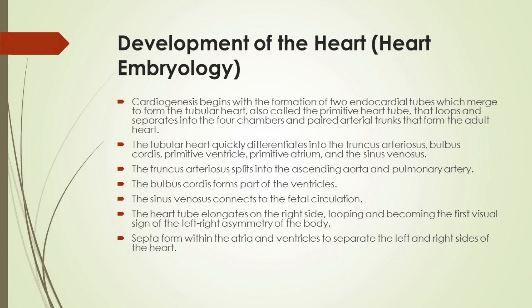The truncus arteriosus splits into the ascending aorta and pulmonary artery. The bulbus cordis forms part of the ventricles. The sinus venosus connects to the fetal circulation. The heart tube elongates on the right side, looping and becoming the first visual sign of the left-right asymmetry of the body. Septa form within the atria and ventricles to separate the left and right sides of the heart.